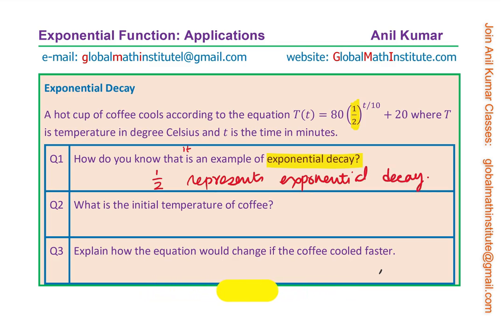Specifically, the equation tells us that every 10 minutes the temperature cools to half of what it was. That is all you need to answer for this part.